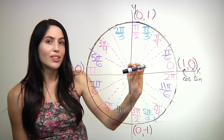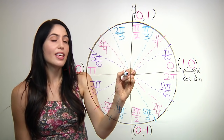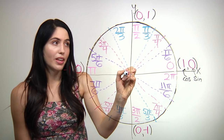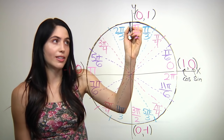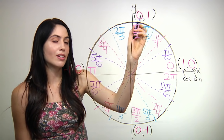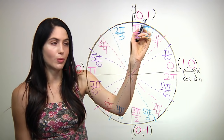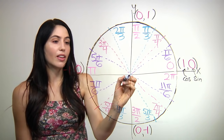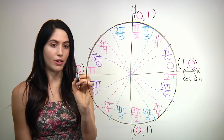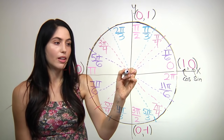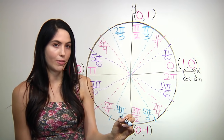Now let's move to the top of the circle at pi over two. The x distance is zero and the y distance is a full one unit, so we have zero comma one — the cosine is zero, the sine is one. On the left side we have negative one, zero as the x, y coordinates. On the bottom of the circle, we have zero, negative one.